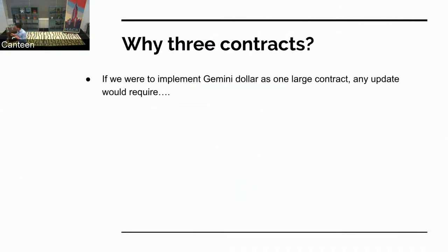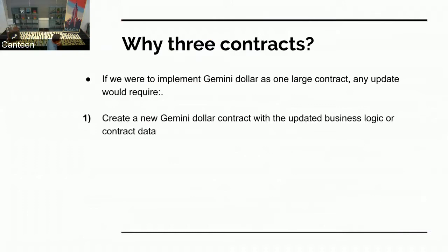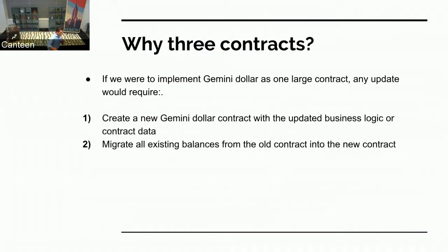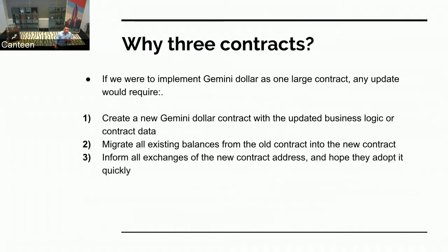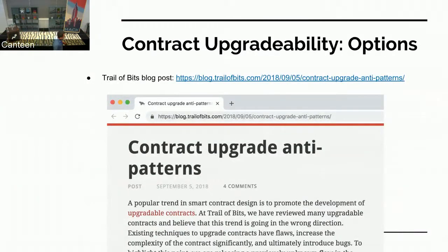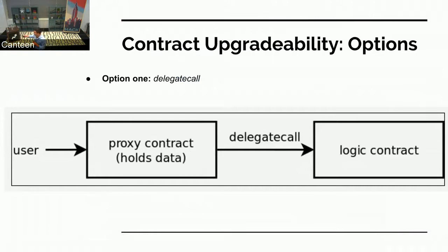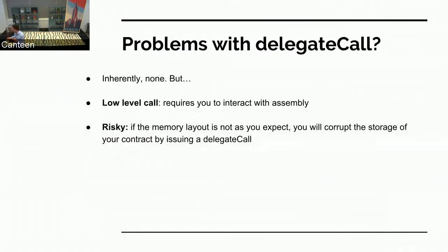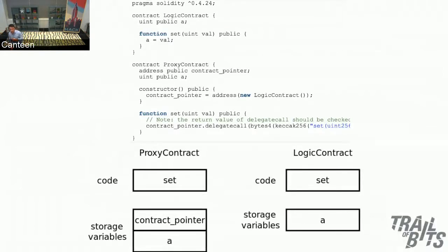If we were to implement the Gemini dollar as one large contract, any update — for example our business logic — would require creating a new Gemini dollar contract, issuing it on chain, migrating all the existing balances to the new contract, and telling every single exchange about the new contract address and hoping they update quickly. That's not ideal — it's extremely high friction. Delegate call is one option for upgradability, but it's a low-level call and it's risky and not easily testable. So we didn't want to do this.